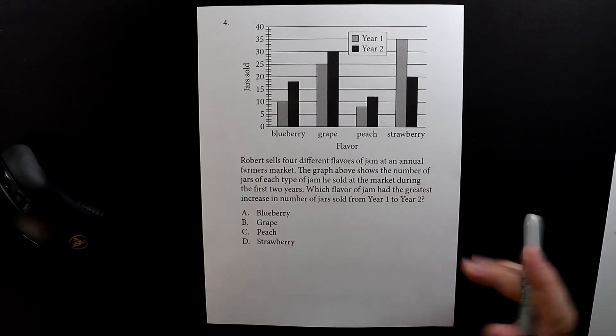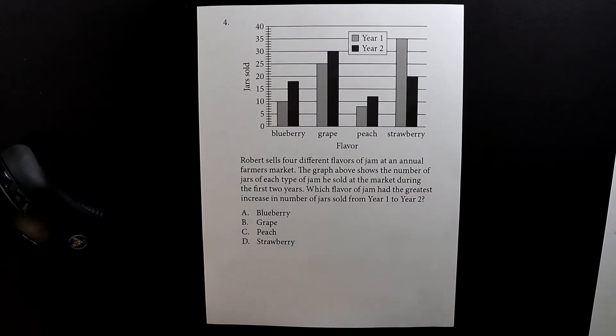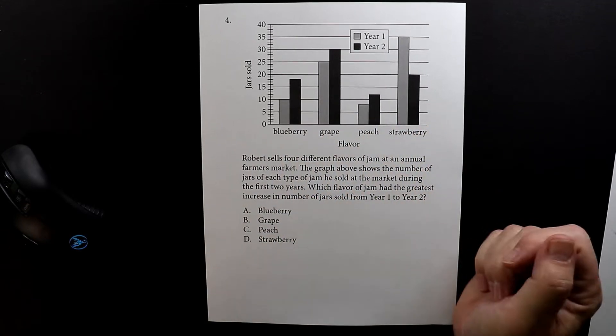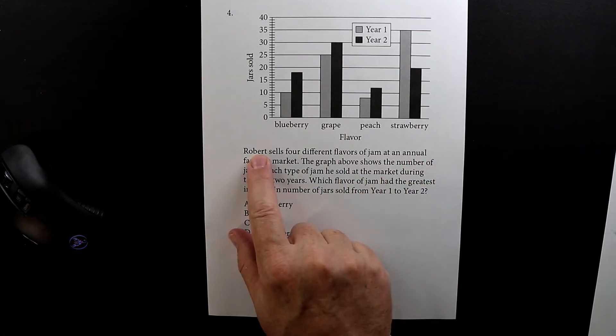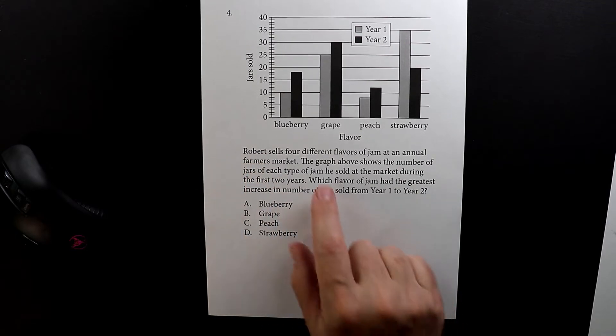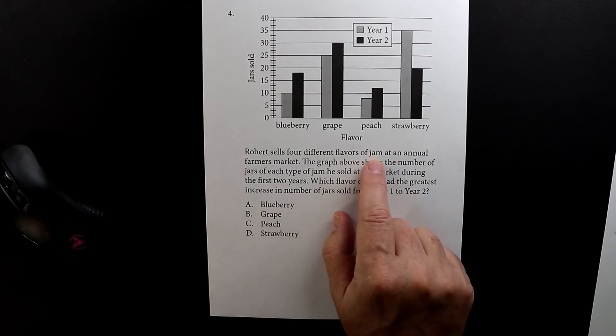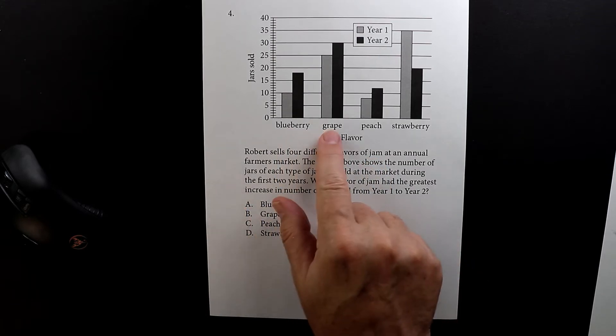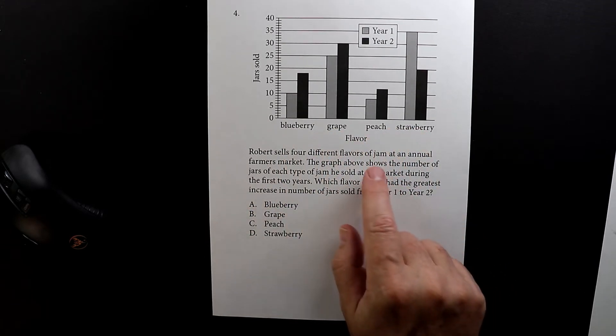So this is number four for the second test and this one you have to show that you understand how to read graphs. So let's tell the story here about this guy named Robert. Robert sells four different flavors of jam. Jam is the same as jelly, so he sells blueberry, grape, peach and strawberry.